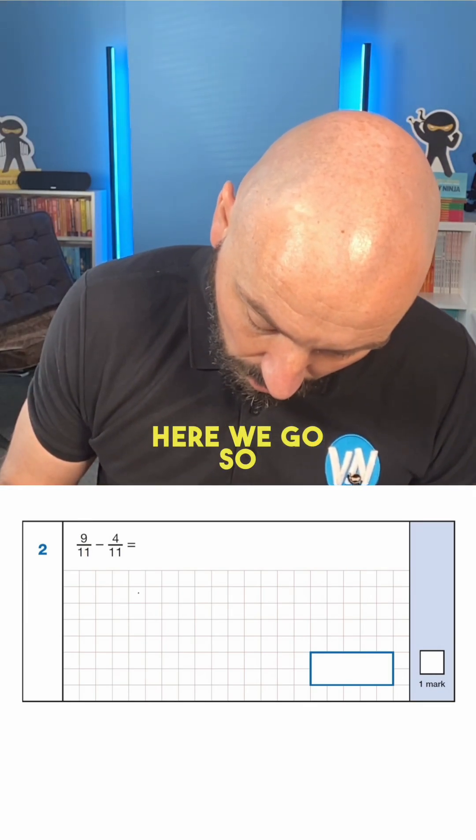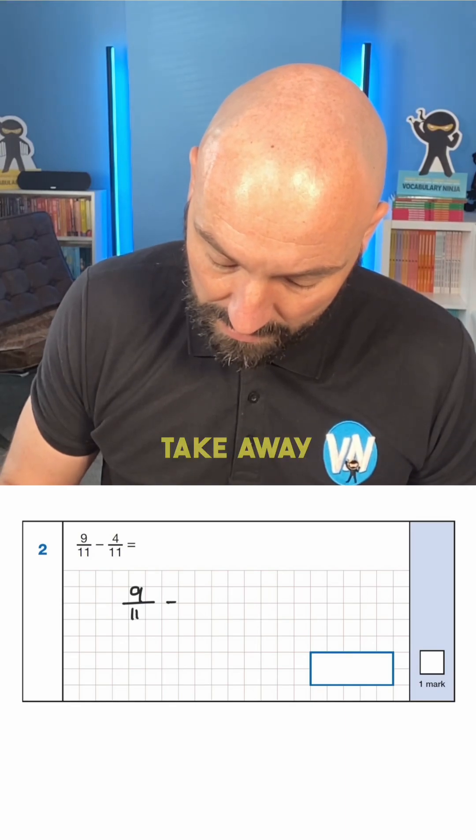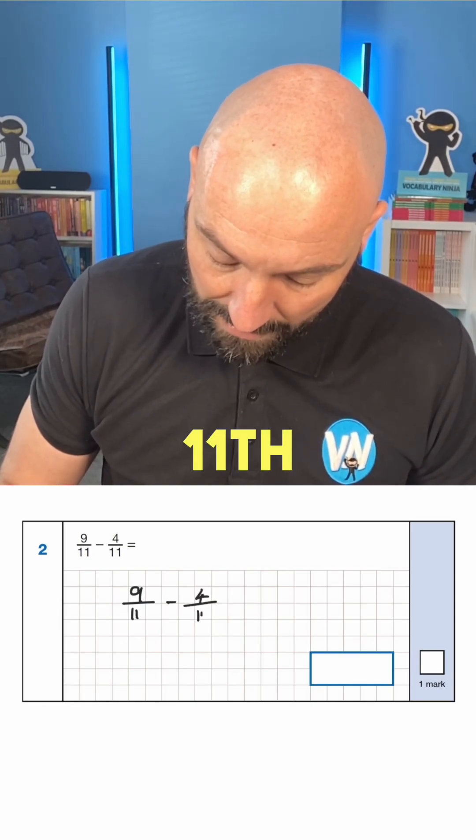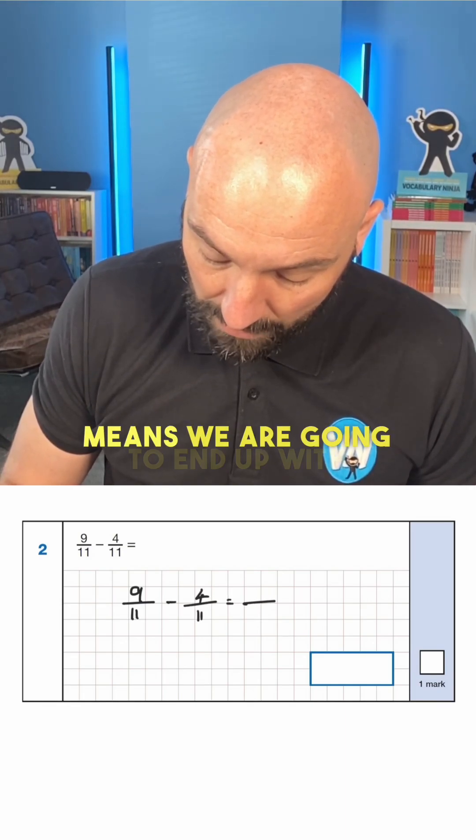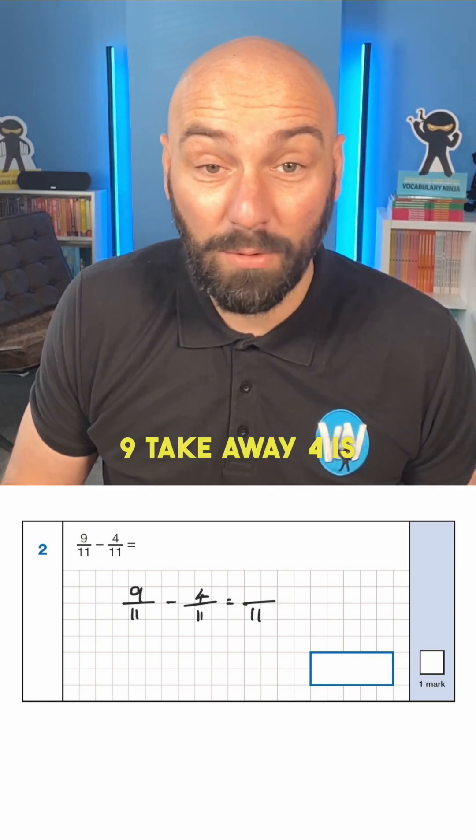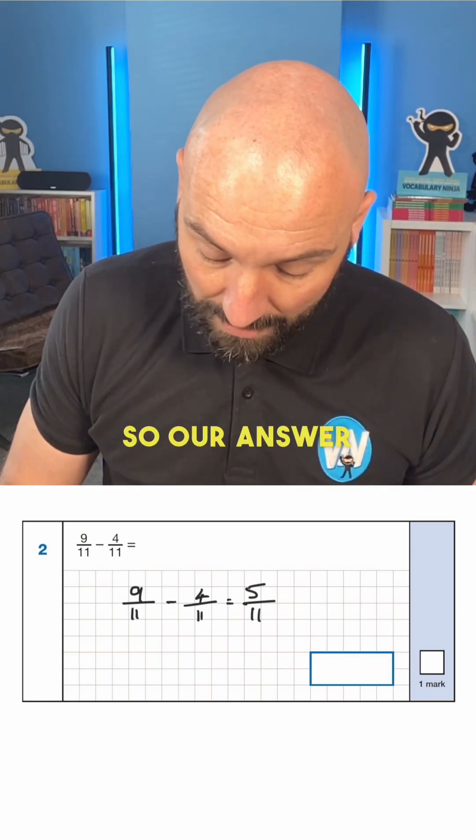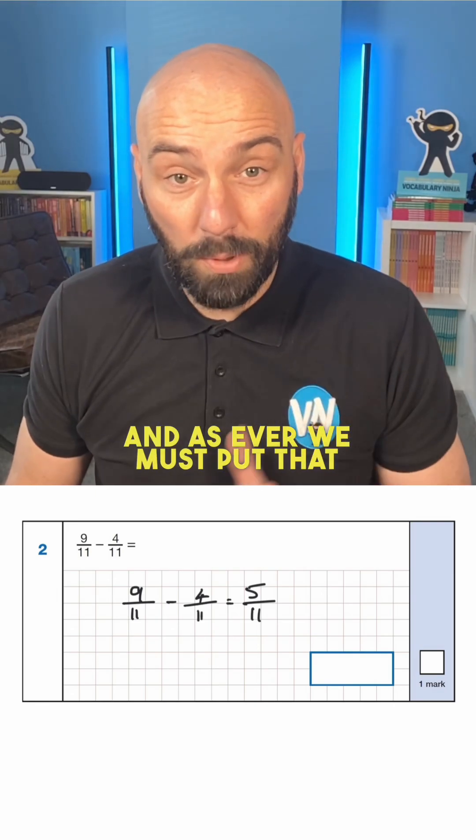Here we go. So 9 elevenths take away 4 elevenths means we are going to end up with elevenths. 9 take away 4 is 5. So our answer is 5 elevenths.